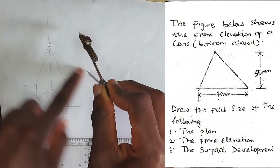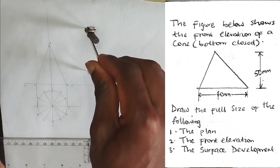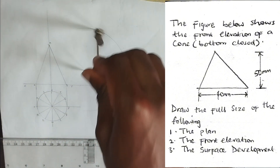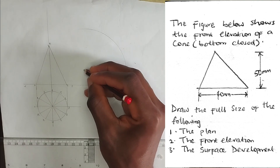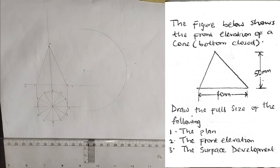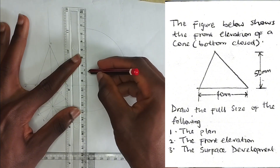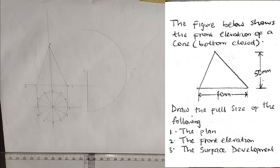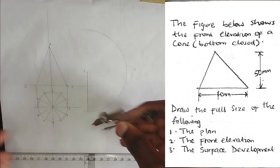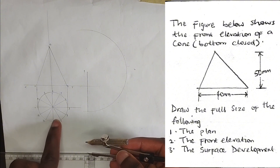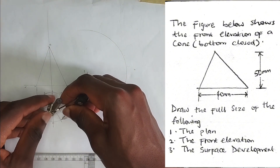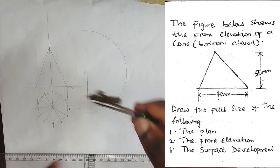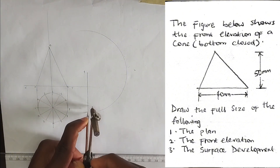I pick OB and place it at a random point beside the front elevation, then draw a curve in this manner. I label that point as P. From point P I draw a straight line touching the curve. Next, I pick the compass and set it to the size of one division of the circle — one of the 12 equal parts — then place it on the curve and mark 12 points.